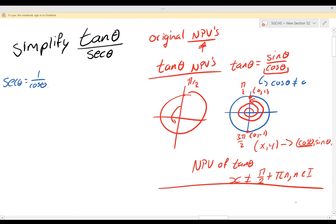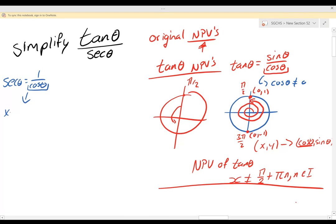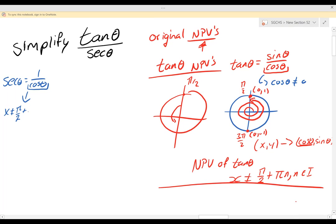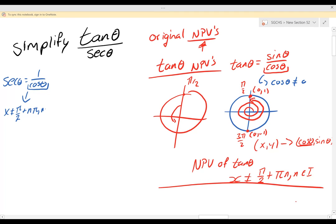Well guess what? This is actually going to have the exact same non-permissible values as tan. x cannot equal π/2 plus nπ where n is any real integer.